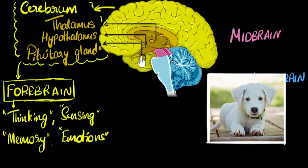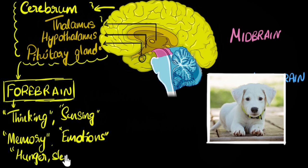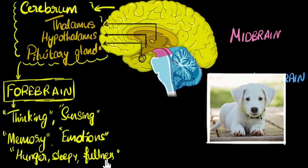Besides these, there are also other things the forebrain does. Some feelings — like the feeling of hunger, the feeling of being sleepy, thirst, or the feeling of fullness after finishing a meal — all of that also comes from your forebrain. Actually, that comes from a specific part of the forebrain, but we don't have to remember all those details. So these are some of the functions of your forebrain.